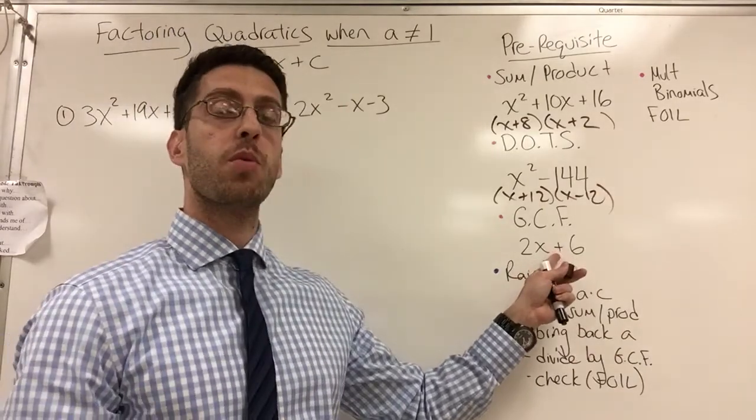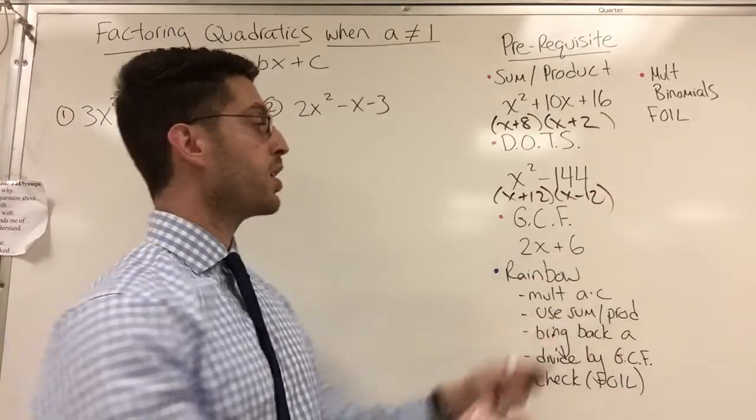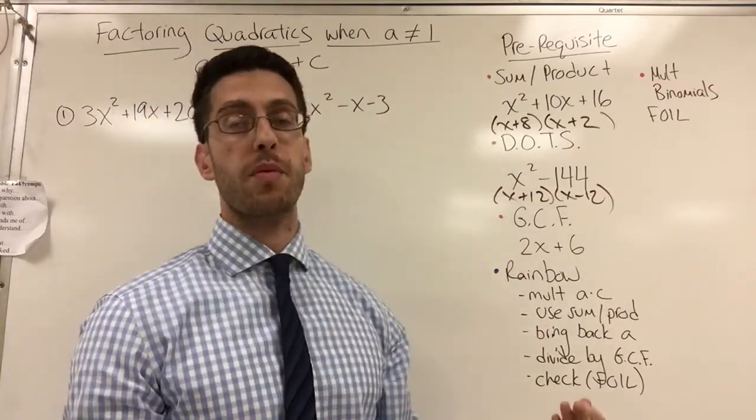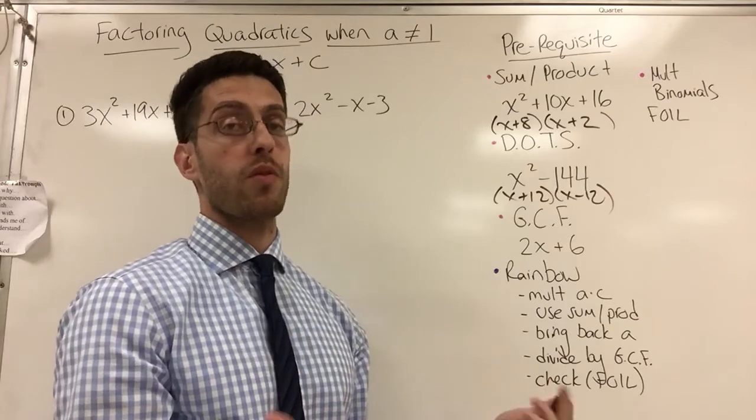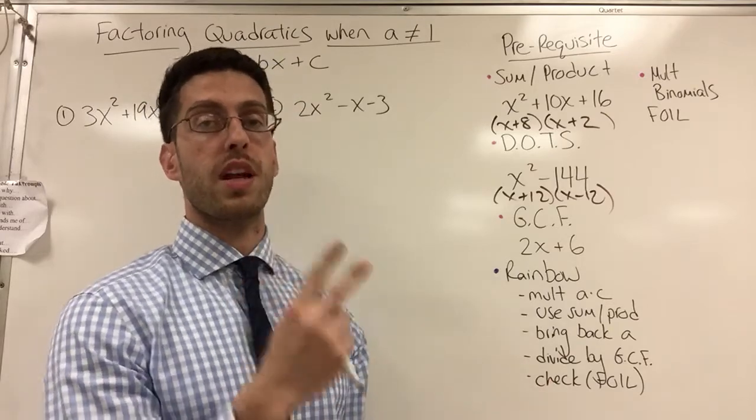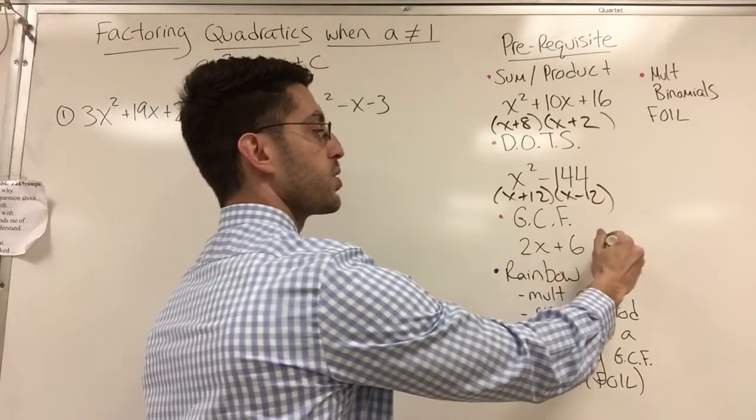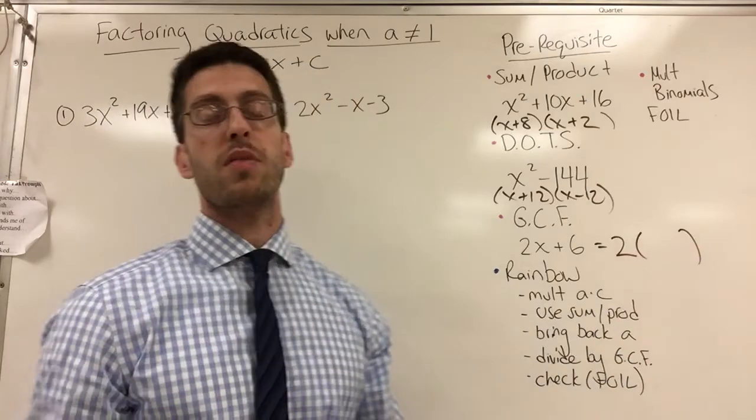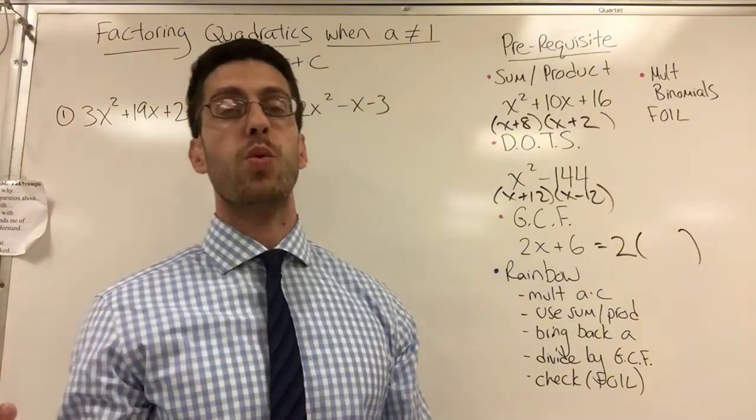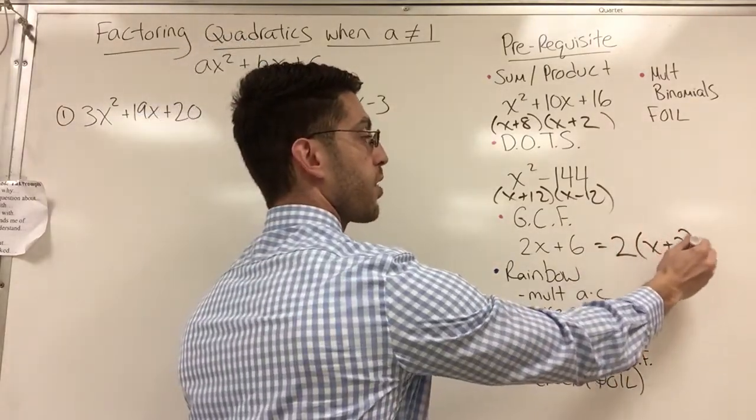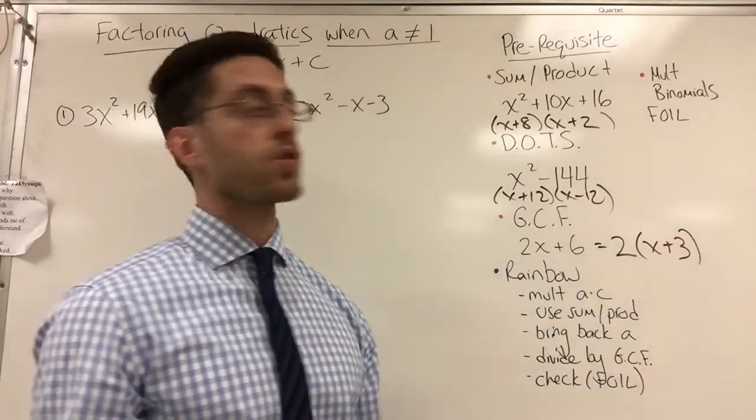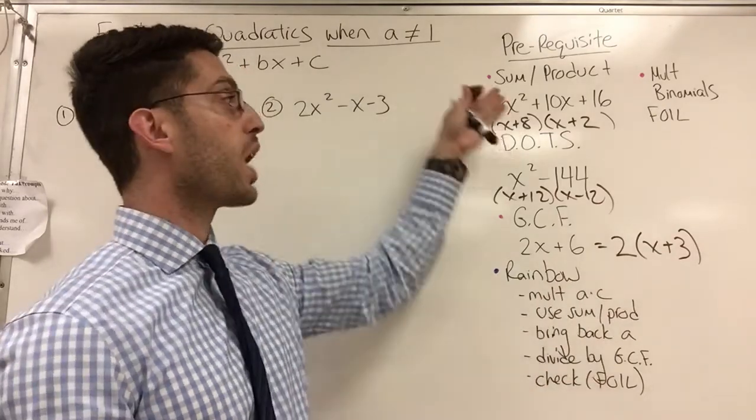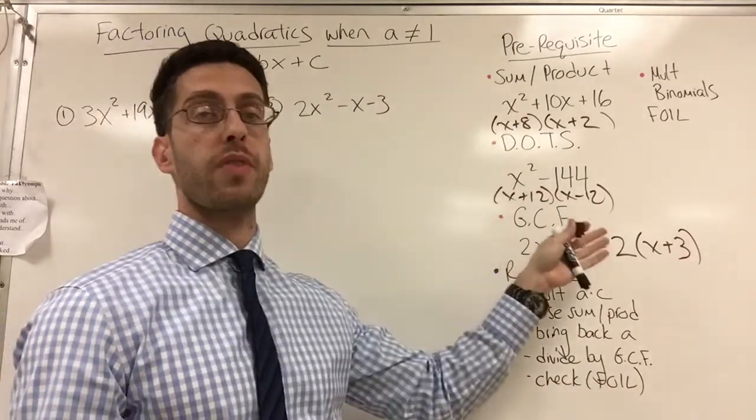You also need to be comfortable with finding the GCF, the greatest common factor. So actually, the first thing you do when you factor anything is you look for a greatest common factor. Is there a number or variable that goes into all the terms that I see? Well, I see a 2x, I see a 6, so I know that 2 goes into both. I factor out the 2, and I ask myself, if I factored out or divided out a 2, what's left? x plus 3 would be left, and if you're not sure, you distribute, and you get back where you started so you know you're correct. You've got to be familiar with all these ways of factoring, all right?